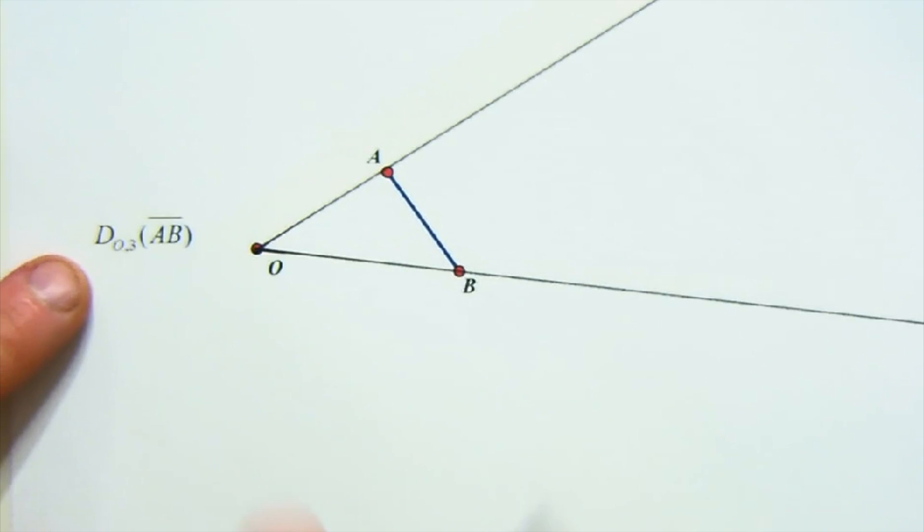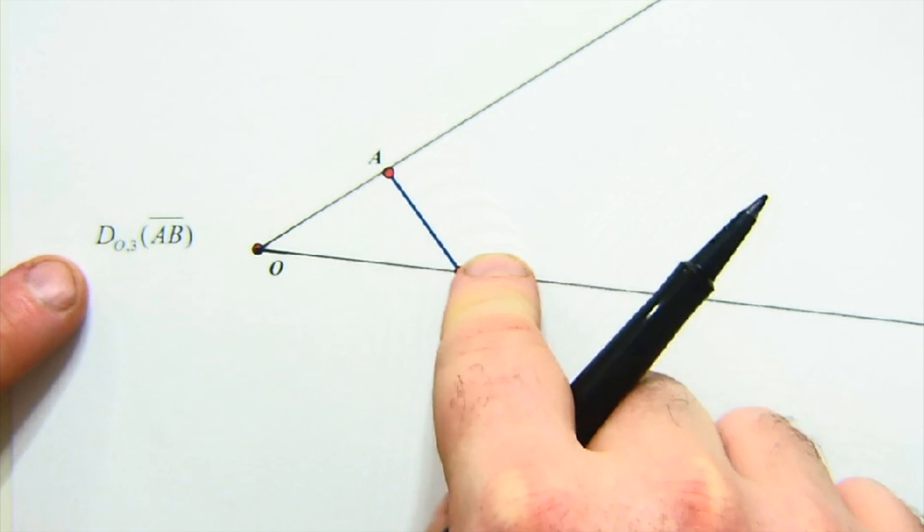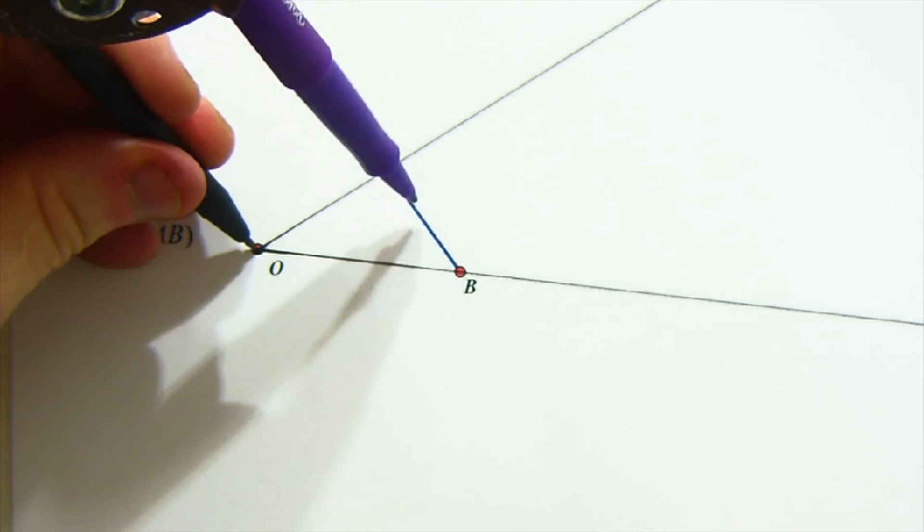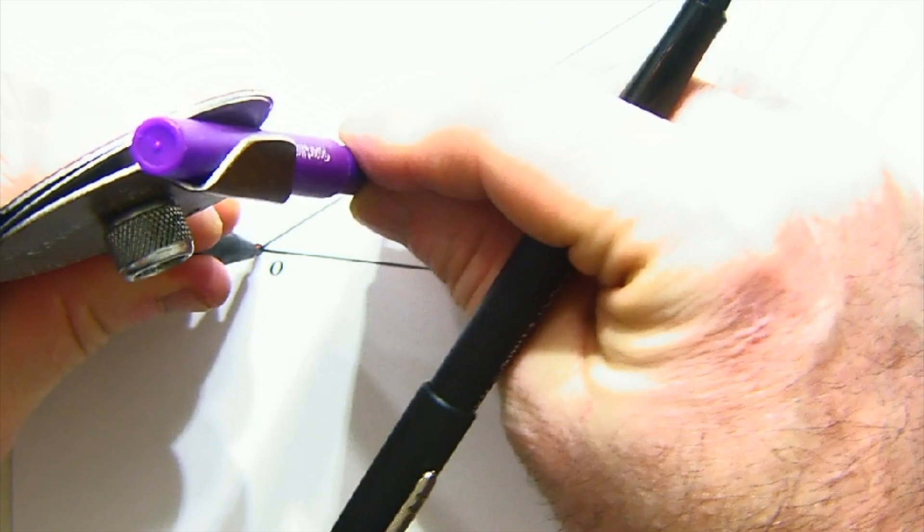In this case, we're dilating from O the segment AB, scale factor two. You know what to do here - this isn't really a place for a ruler. When we measure, we always like to measure with our compass.